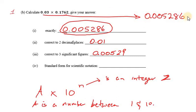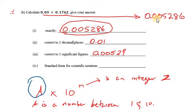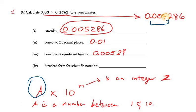We want to get this number as a number between 1 and 10 — that's the A portion. Where do we shift the point so that the number is between 1 and 10? If you put it here, it's less than 1. Put it here, still less than 1. Put it here, it's now 5 point something — and so now it's between 1 and 10. We move the point and put it right after the first non-zero digit, which is 5.